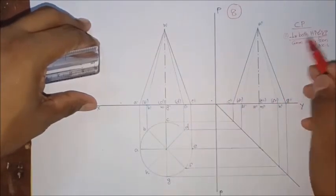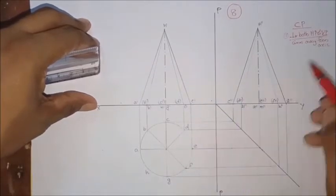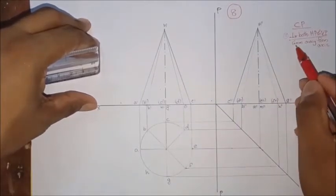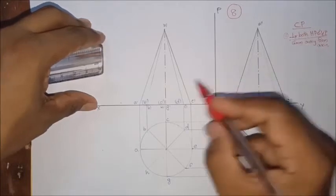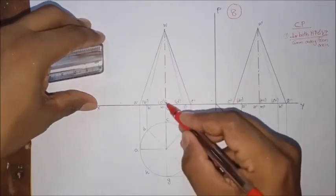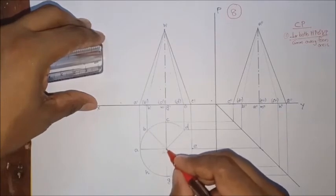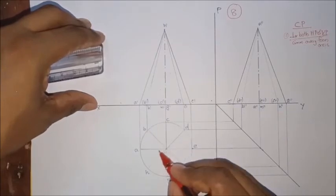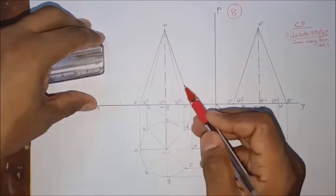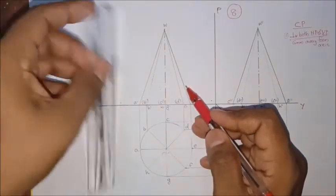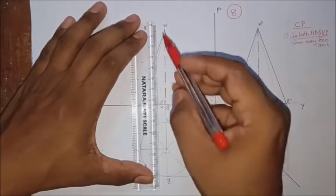This is perpendicular to both HP and VP, so we have the cutting plane at the top. Now we are going to pass the point 6m away from the axis. This vertical line is 6m. So in front view and top view, the section plane appears as a vertical line.